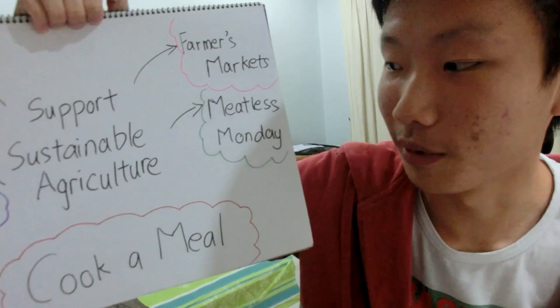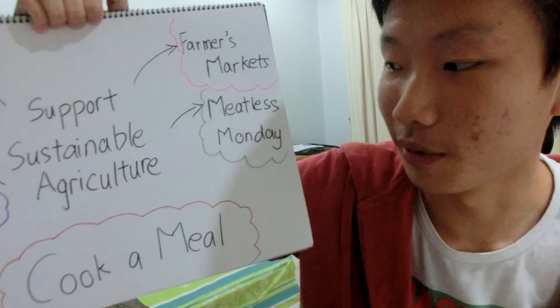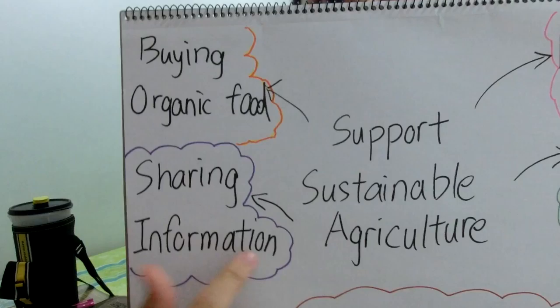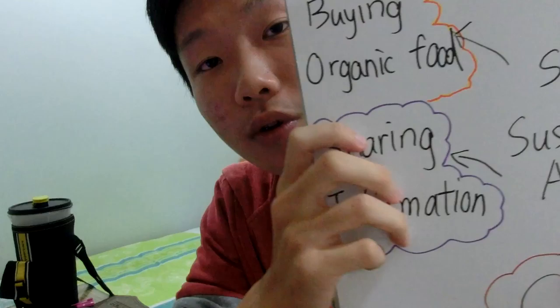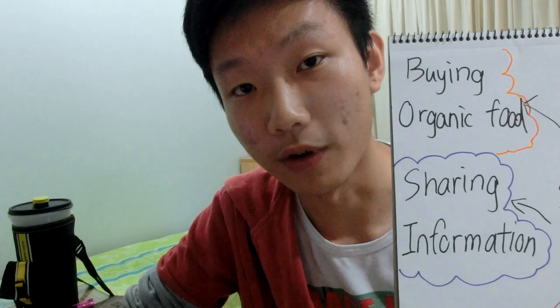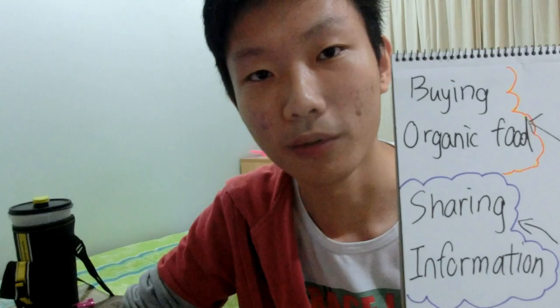The third way is buying organic foods. Since sustainable agriculture produces organic foods, by supporting them it will encourage them to continue their business and give them the ability to keep selling sustainable agriculture organic products for people like us.